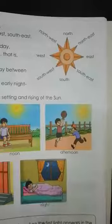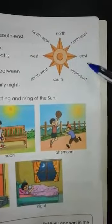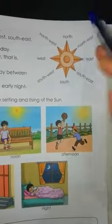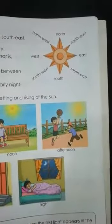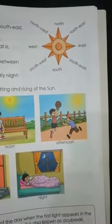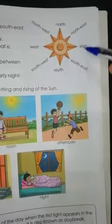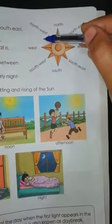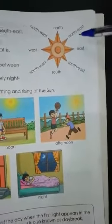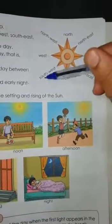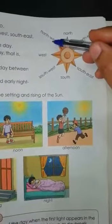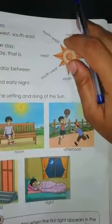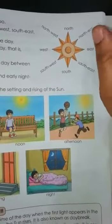Next are sub-directions. These are the four main directions — east, west, north, south. And there are four sub-directions also. Which are they? North-east, south-east, south-west, and north-west. So there are four main directions and four sub-directions. Understood?